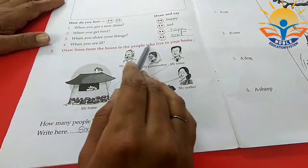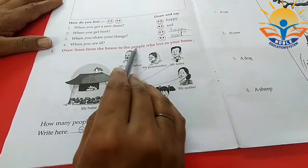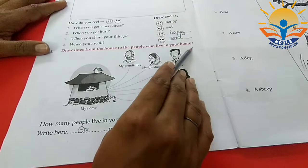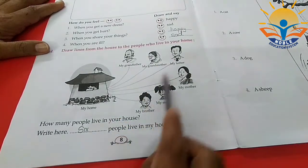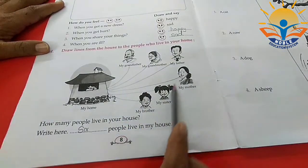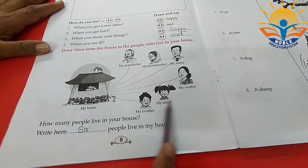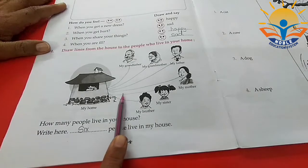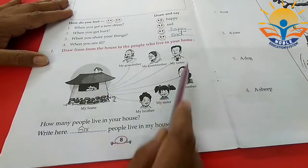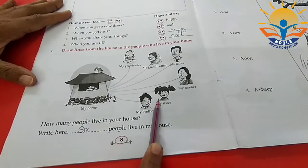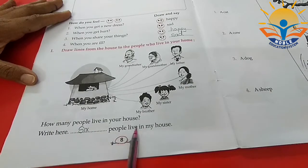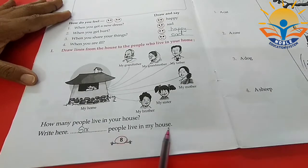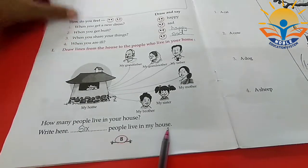Draw lines from the house to the people who live in your home. Count how many people live in your house and write the number here. Six people live in my house.